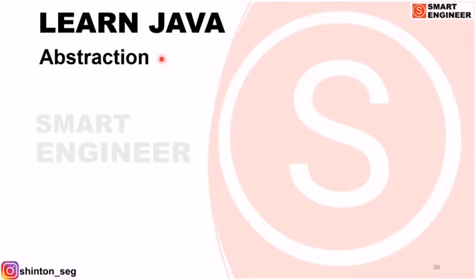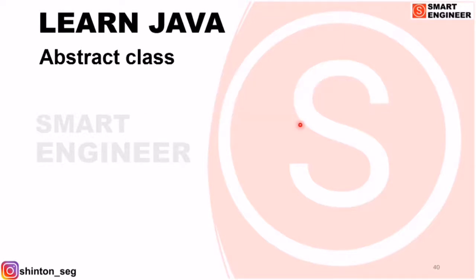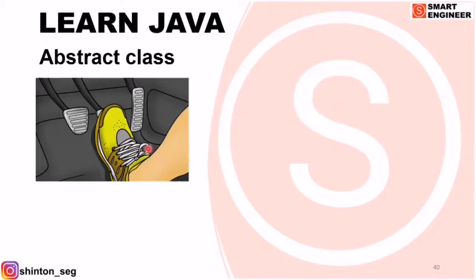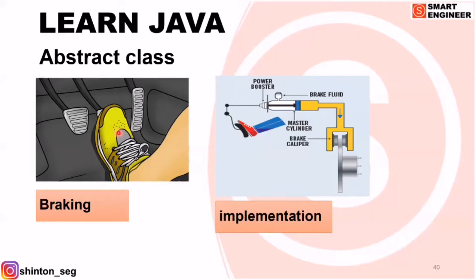In this video, we are going to learn about abstraction. Abstraction is the process of hiding the implementation and showing only functionality to the user. For example, when a user is driving a car, he knows that when he applies force on the brake, the car will stop. Braking is the function. But how the brake actually works — that is the implementation, which is hidden. Only the function is visible to the user. That is what is called abstraction.